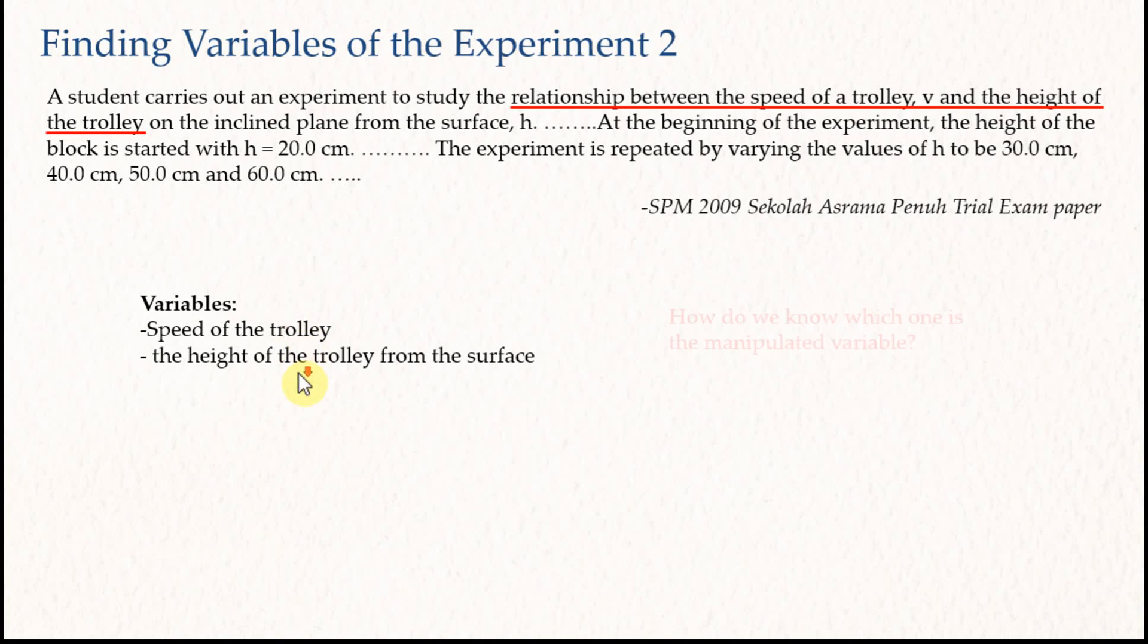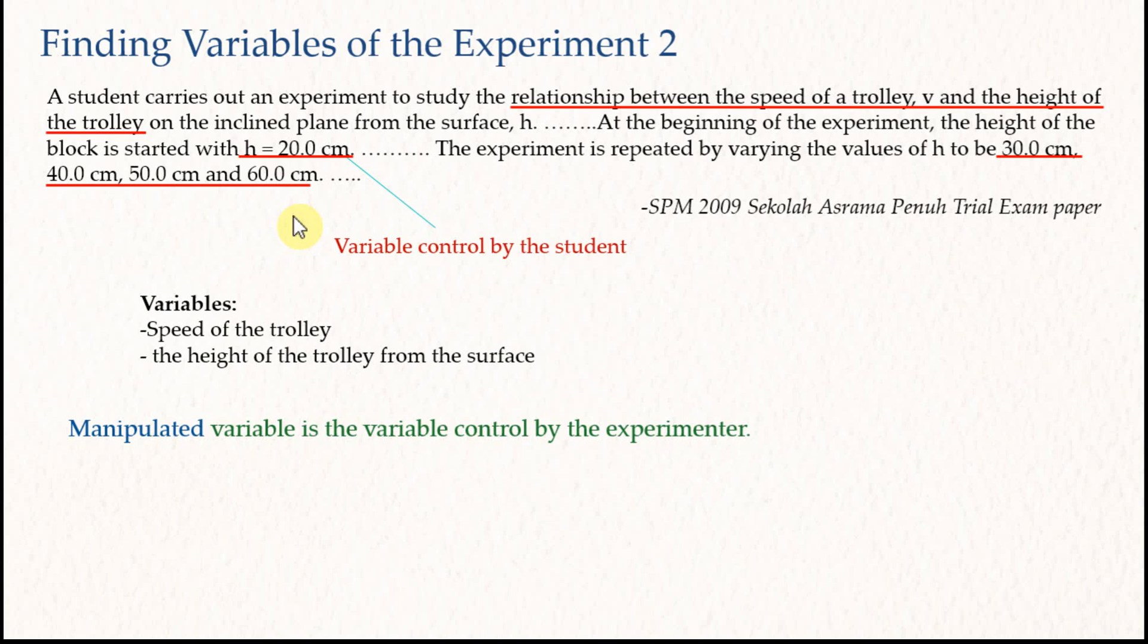However, how do we know which one is the manipulated variable and which one is the responding variable? Well, the manipulated variable is the variable controlled by the experimenter. And this question told us that the experimenter controls the height of the trolley. It started from 20 cm. After that, it adjusted to 30 cm, 40, 50, and 60 cm. So this is the variable controlled by the students. And therefore, in this case, the manipulated variable is the height of the trolley from the surface. And therefore, the responding variable is the speed of the trolley.